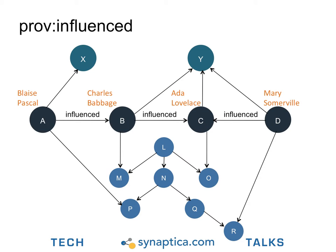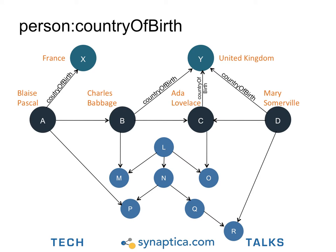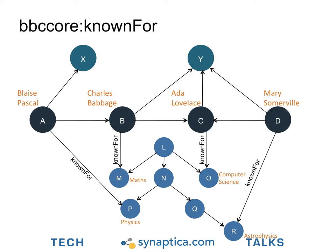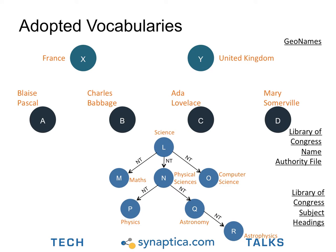When it comes to modeling in linked data, one of the first things to decide is whether to work in a silo and custom develop ontologies — which comprises classes, relationships, and properties — and develop our own vocabulary of terms within each class, or to adopt linked open data principles of using authoritative ontologies and vocabularies. In our example, we will use the associative relationship PROV-influenced contained in the PROV ontology, person:countryOfBirth from the Person ontology developed by the European Commission, and BBC Core's 'known for' from the BBC ontology. We may already have pre-cached copies of the vocabularies we wish to adopt. In our example, we chose to use the name authority file and subject headings vocabularies from the Library of Congress, and we may wish to search for their linked data resource or subject URIs.